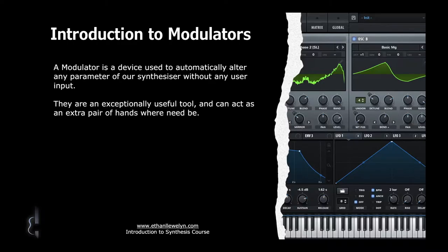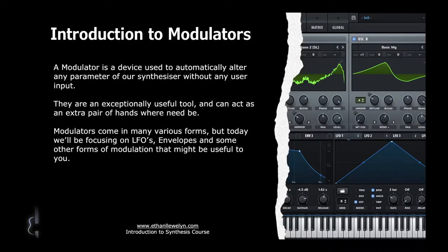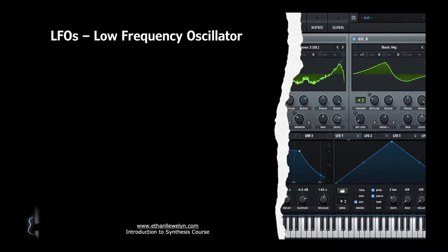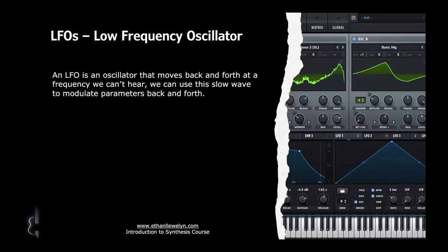Modulators can act as many different pairs of hands. They come in many various forms, but today we are going to be focusing on LFOs or low frequency oscillators, envelopes, and some other forms of modulation. An LFO is an oscillator that moves back and forth as a wave would, at a frequency we can't hear - typically described as subsonic because it normally operates below 20 hertz, which is the lowest frequency we can hear.